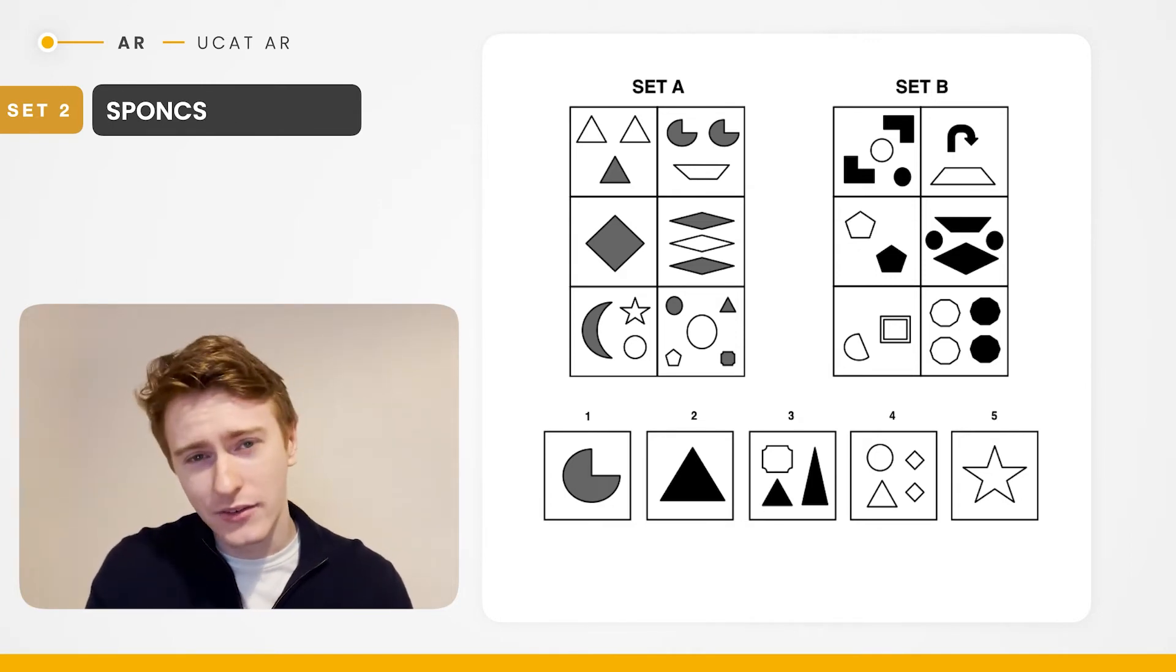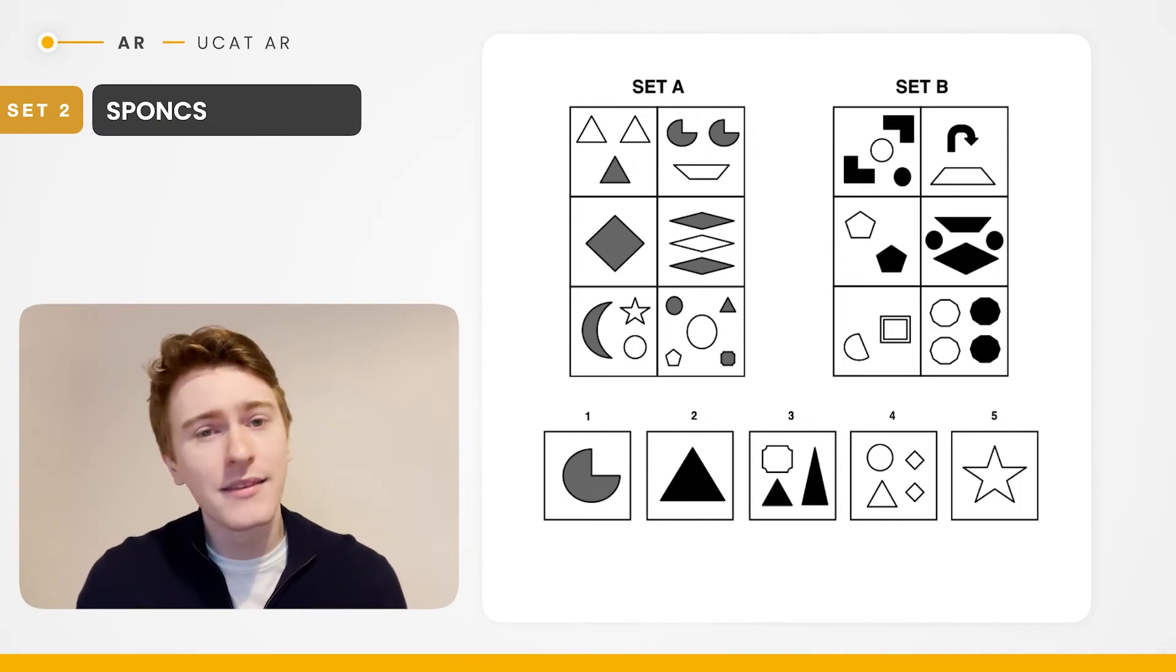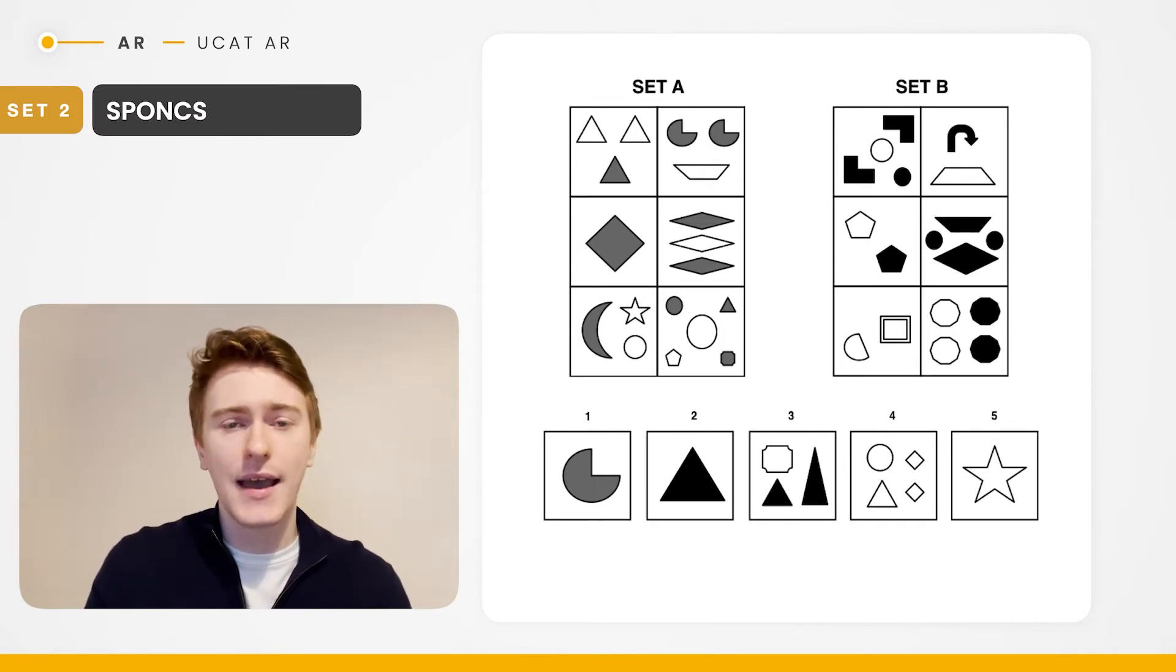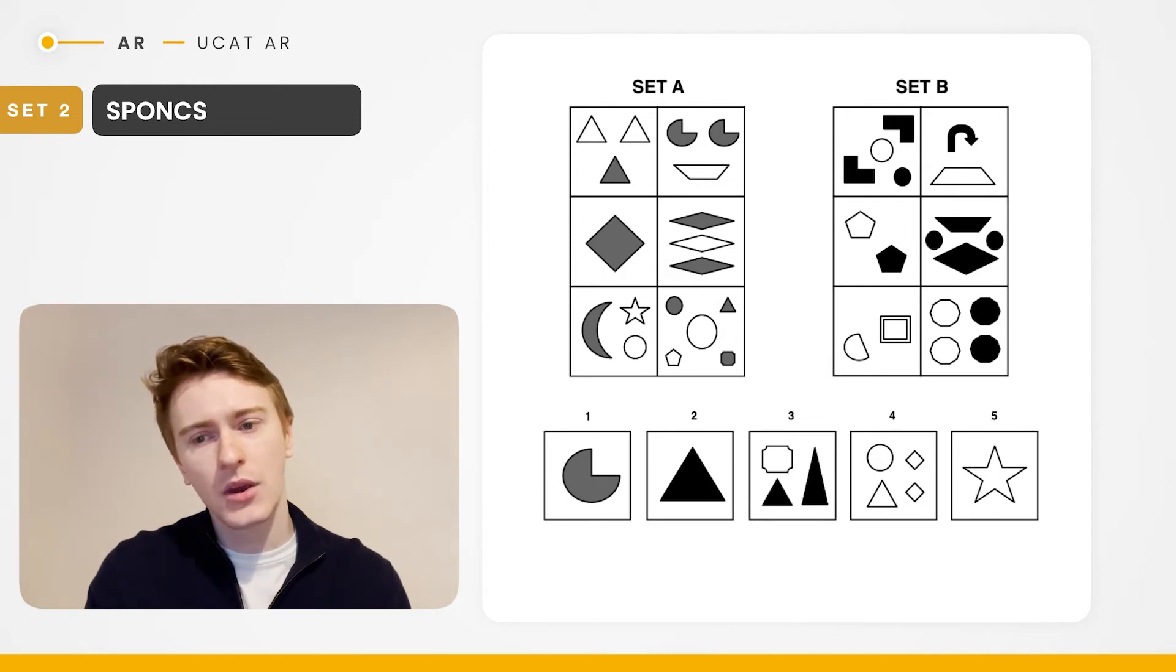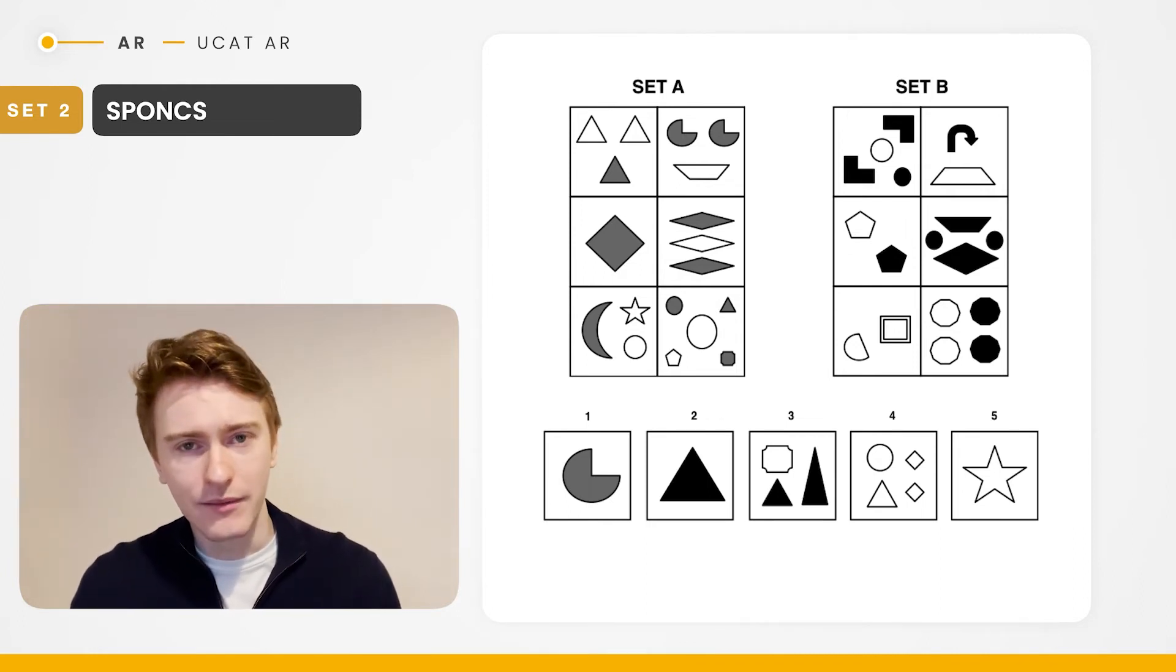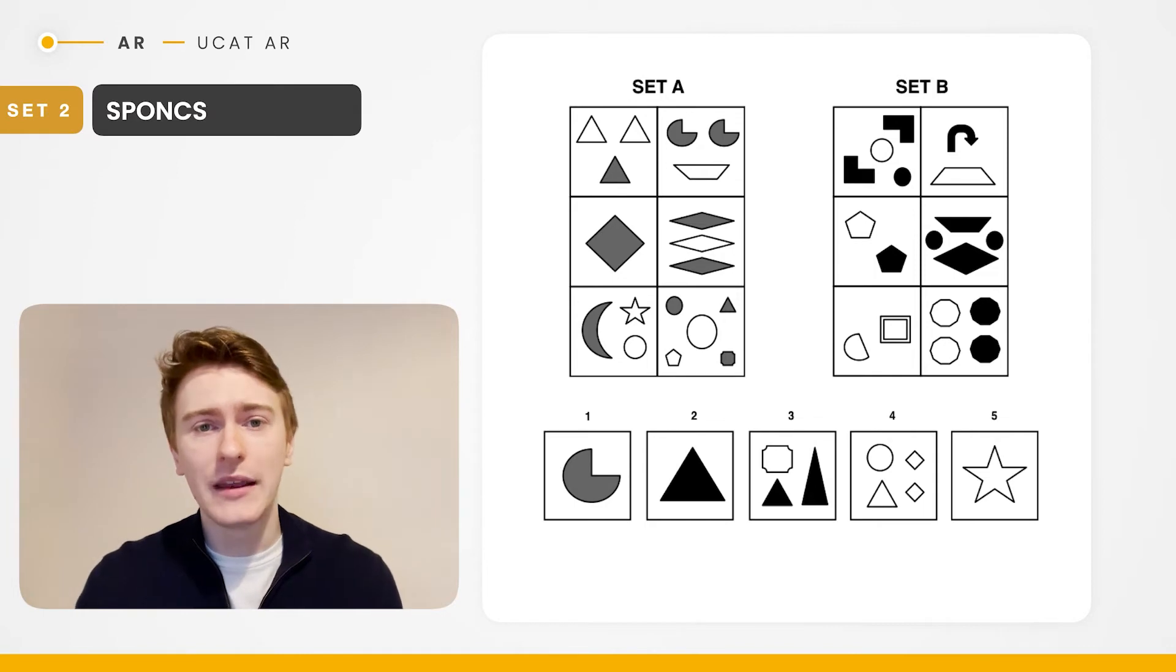You can also see that in the middle right, you've got that quadrilateral, which is repeated three times again to make it easier for you to count. So when we count them up, we see that all of the examples in set A have an odd number of shapes, whereas in set B they're all even. Now that's enough to be a differentiating pattern and you can happily move on.